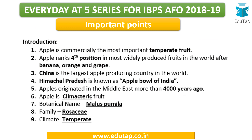Quickly going through the key points: first, apple is a temperate crop, which we discussed in the previous lecture. Apple ranks 4th in the most widely produced fruits in the world — the first being banana, orange, and grape. You can see its commercial importance. The largest apple-producing country in the world is China. Also, Himachal Pradesh in India is known as the apple bowl of India — this is one fact you need to know.